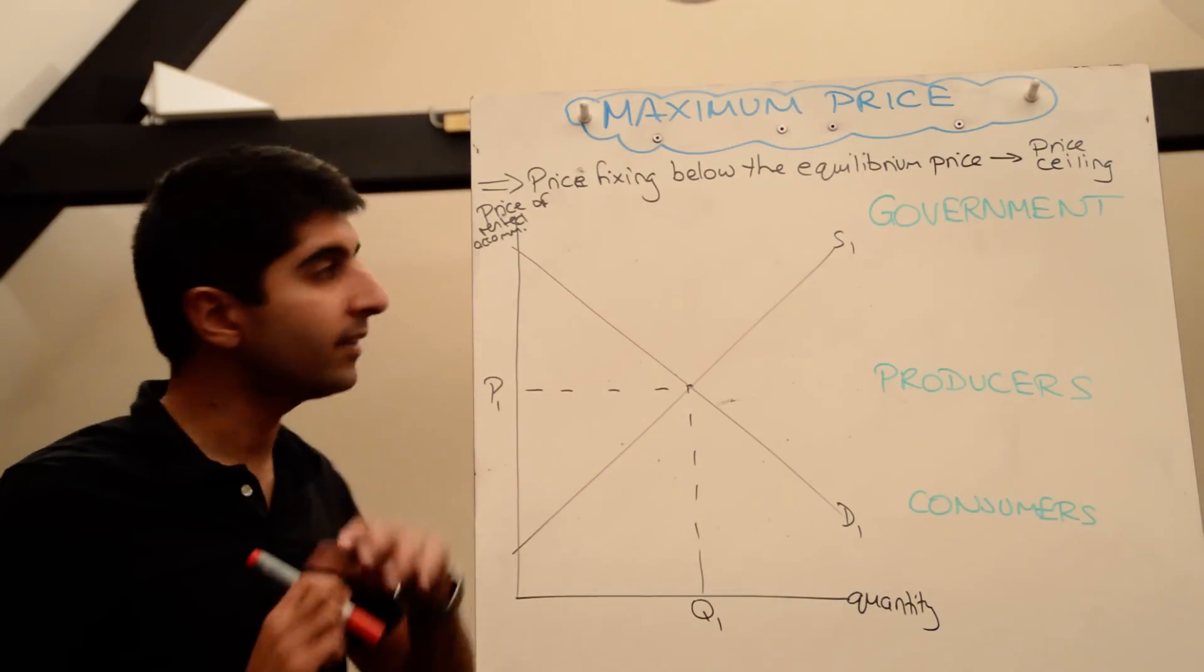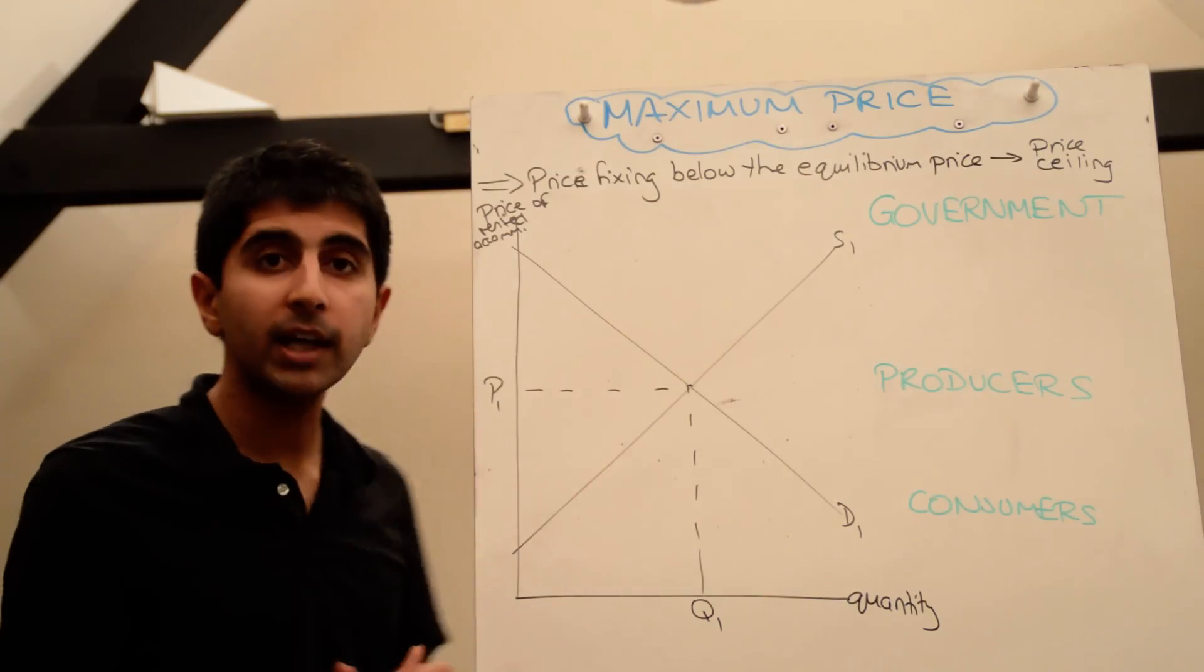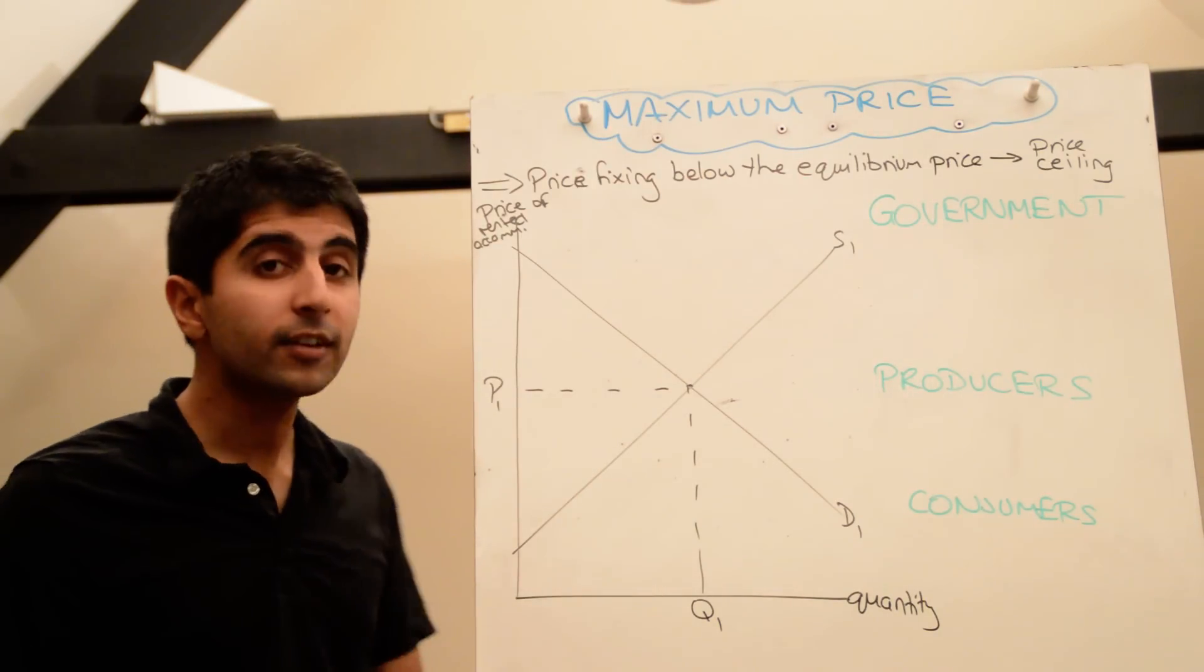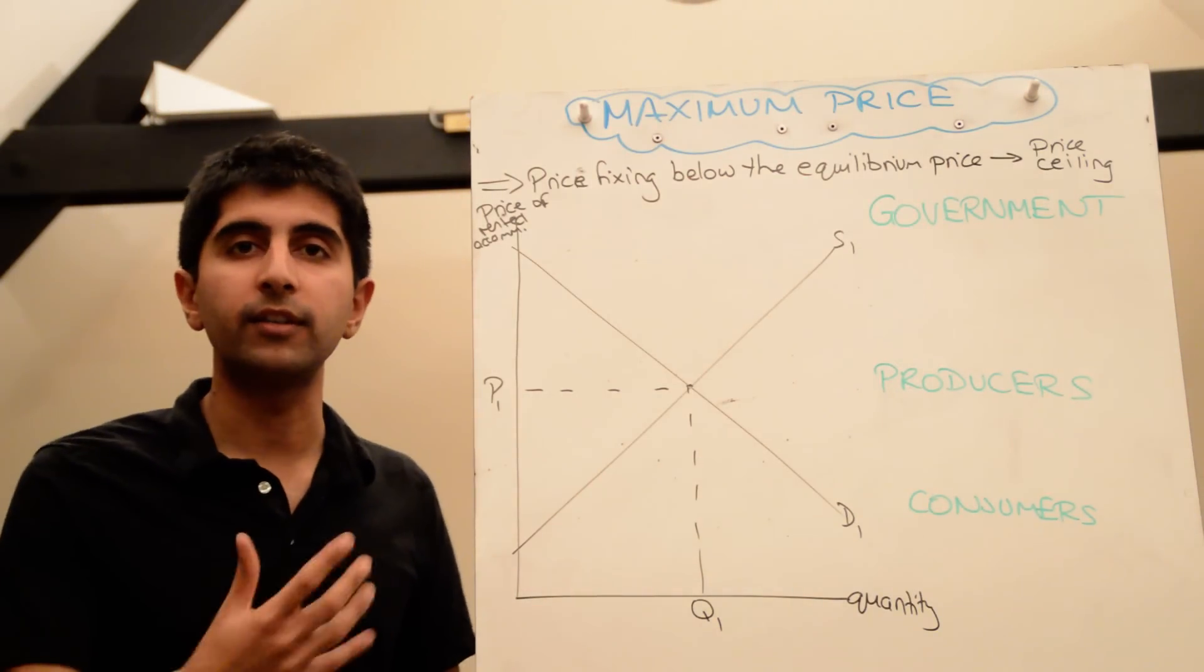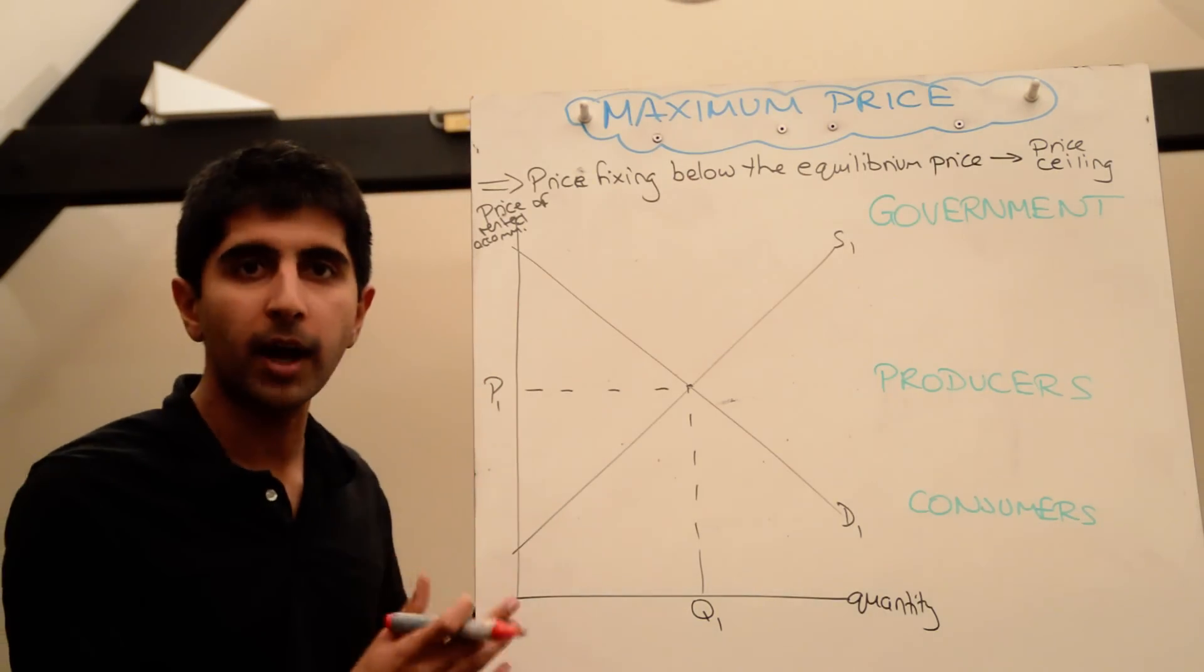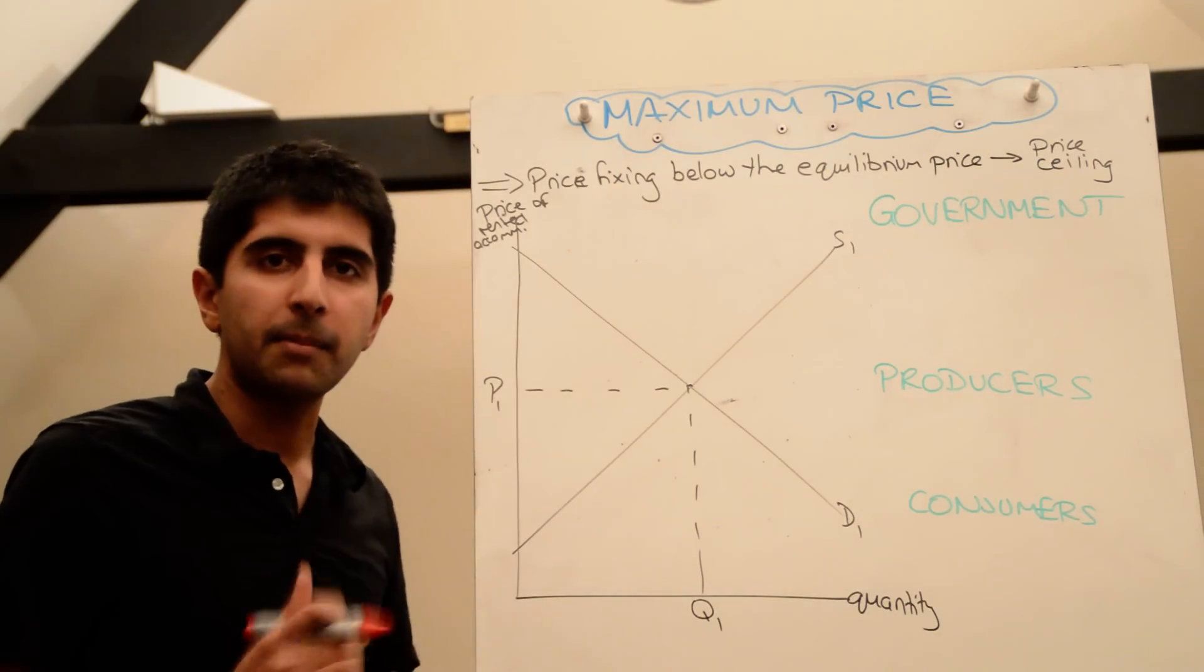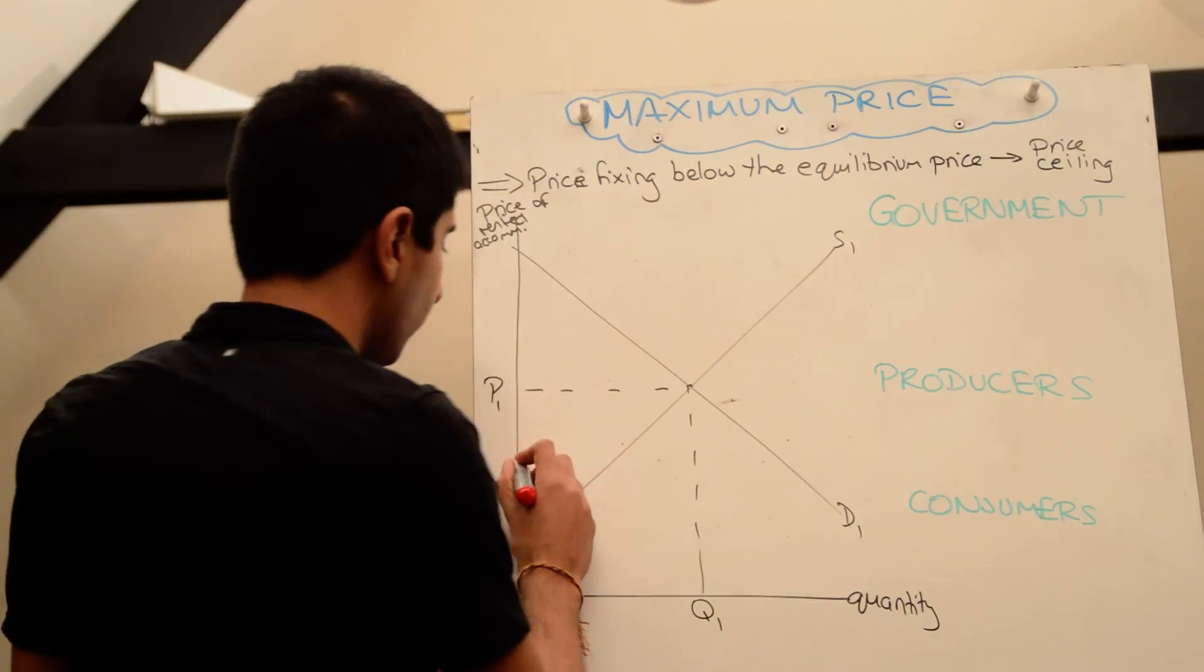So let's have a look at a market. Let's take rented accommodation as our example. We have here the market for rented accommodation, and this is a common market where maximum prices are actually imposed. So let's say governments think that P1 in the free market is too high, and they decide, let's set a maximum price which lowers the price of the market to this level.